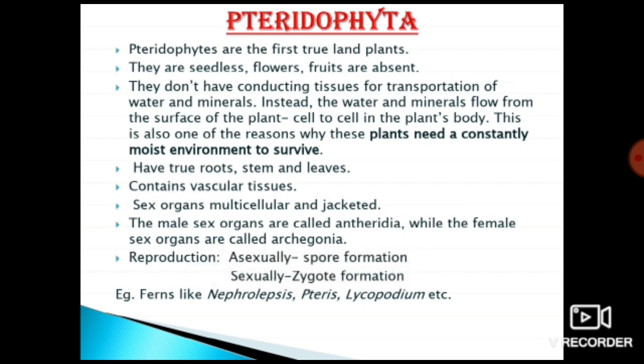Pteridophytes do not have conducting tissue for transportation of minerals and water. Instead, water and minerals flow from the surface of plant cells into the plant body. Because of this they need a moist environment. However, they do have vascular tissues.